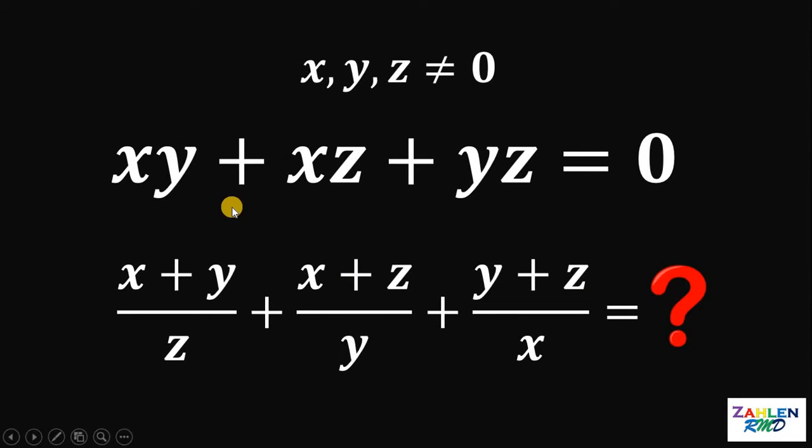If xy plus xz plus yz equals 0 and x, y, z are not equal to 0, then what is the value of x plus y over z plus x plus z over y plus y plus z over x?